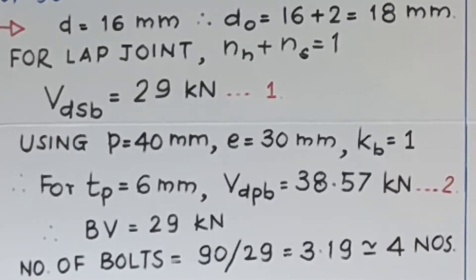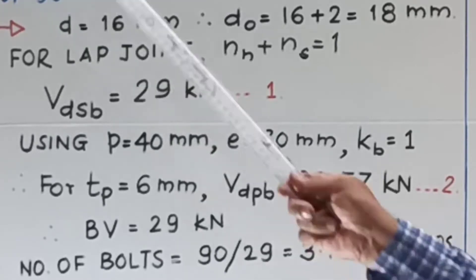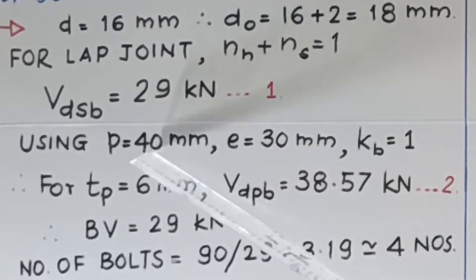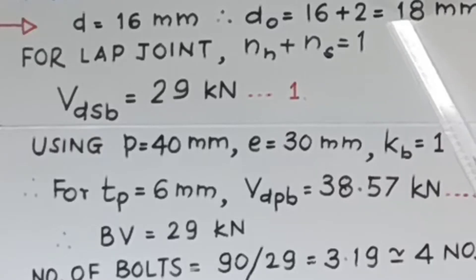Now using minimum pitch and edge distance that is 16 mm, therefore pitch is equal to 2.5 into 16 that is 40 mm and 18 into 1.5, that is 27. So say 30 mm, so if you use P is equal to 40 and E is equal to 30.